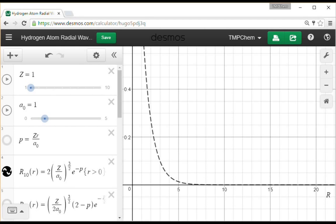This video will show some plots of the radial wave functions and radial distribution functions of the hydrogen atom atomic orbital wave functions.